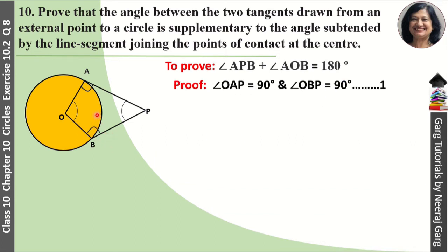Now we consider this quadrilateral OAPB and in this quadrilateral we know that the sum of all interior angles is 360 degrees.